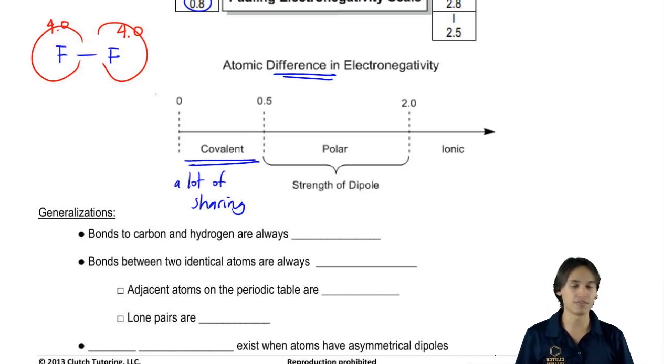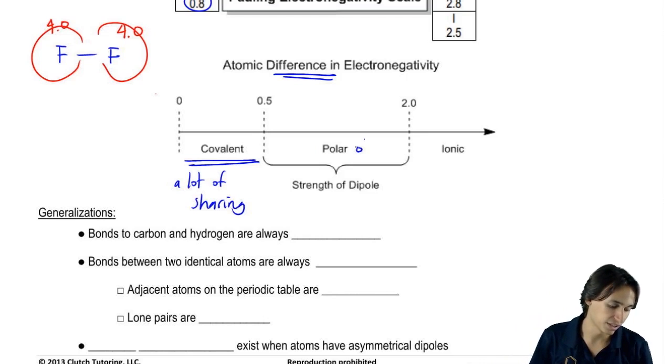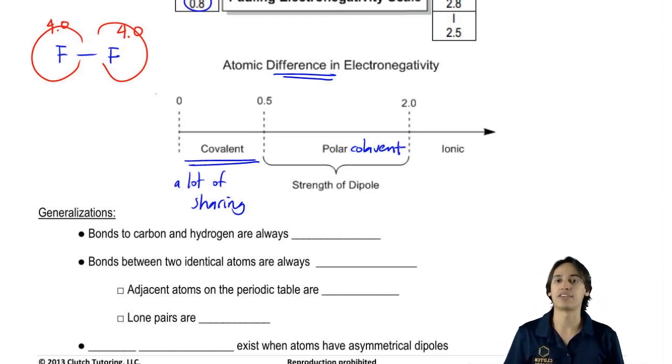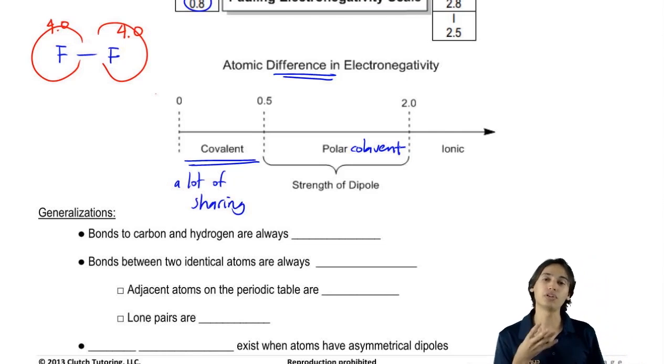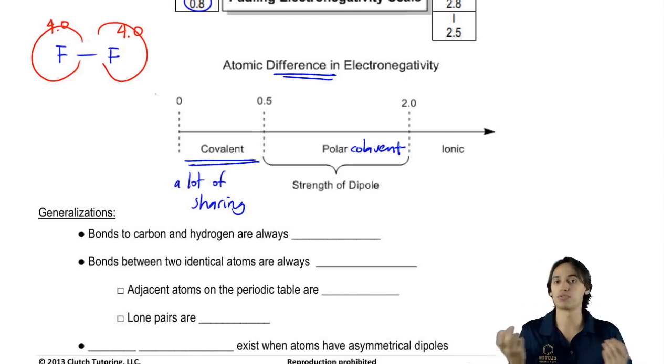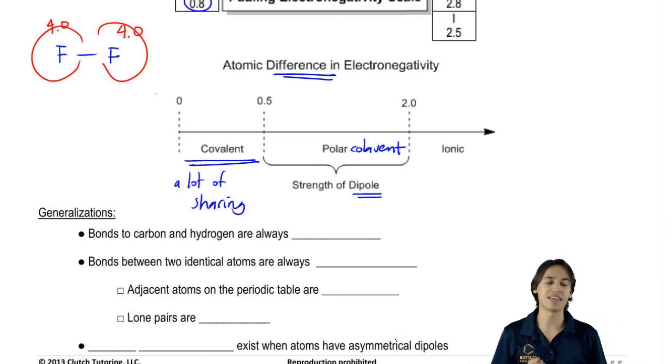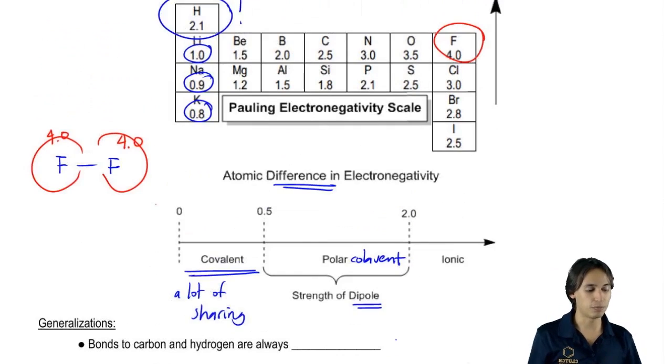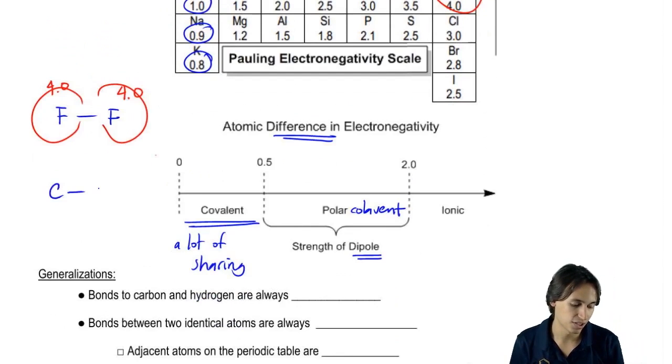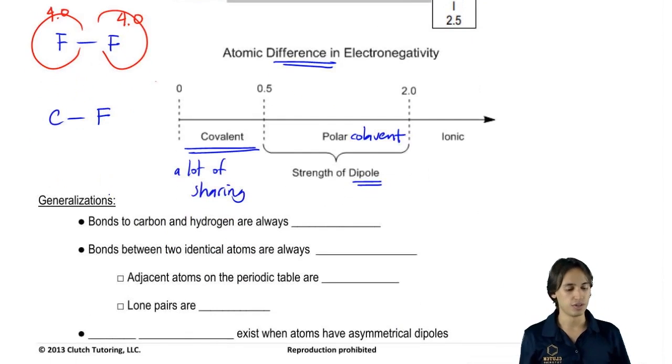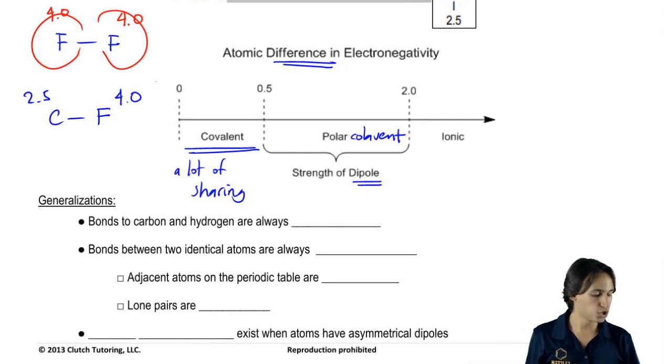Then we have the range between 0.5 and 2.0. These are going to be polar or what's also known as polar covalent. That means that they are covalent in the sense that there is still some sharing, but they're polar. Polar means that it's a dipole. Remember that polar comes from the word dipole. So what that means is that there is an unequal sharing. That means that one of these guys is going to get a little bit more than the other.